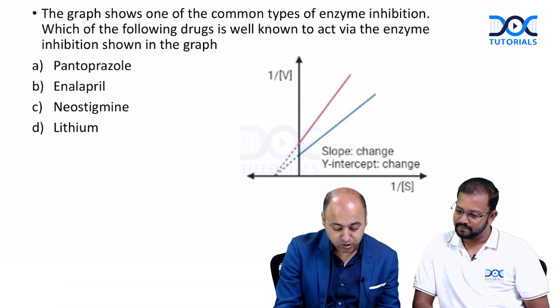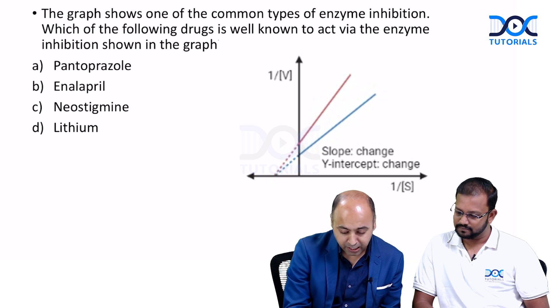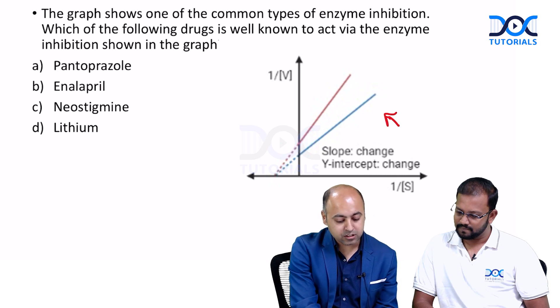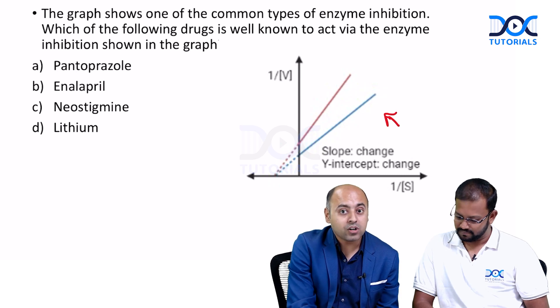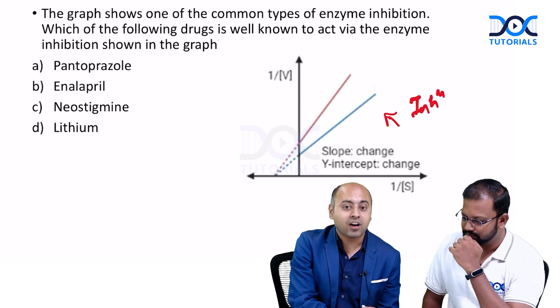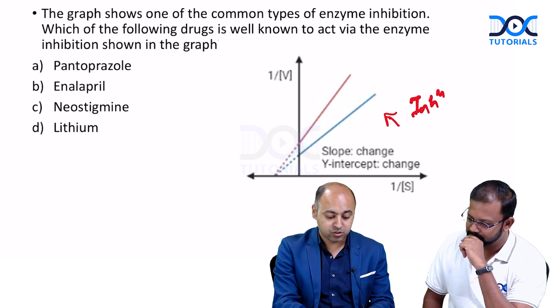So just try to see how we are utilizing information from one subject to help another and finally reach the answer. On screen we have a graph showing one of the common types of enzyme inhibition. You will first identify the type of enzyme inhibition, then determine which of the following drugs acts via the inhibition shown in the graph. The options are pantoprazole, enalapril, neostigmine, and lithium.